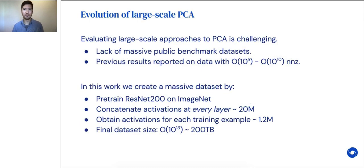Evaluating the large-scale performance of Eigengame, however, is more challenging. There is a distinct lack of truly massive, publicly available benchmark datasets. To our knowledge, the largest experiments in the literature deal with at most 10 to the 10 non-zero entries. In this work, we create a massive dataset by taking a pre-trained ResNet 200 and concatenating its activations at every layer for each example of the ImageNet training set. This gives us a 20 million dimensional vector for each of the 1.2 million samples. The final dataset has 10 to the 13 non-zeros and is almost 200 terabytes in size. This is a technique that other researchers can use to create their own massive datasets for large-scale PCA research. Similar approaches could be used for smaller ResNet models or only taking the outputs after every block rather than every activation.